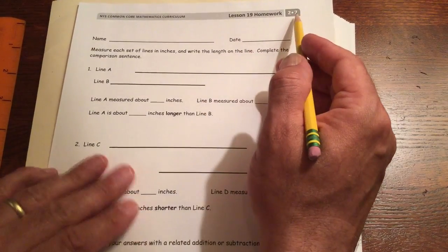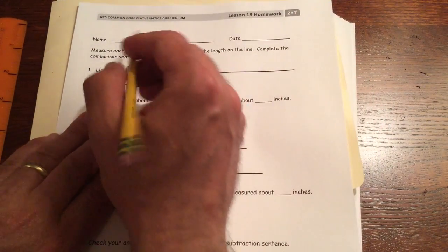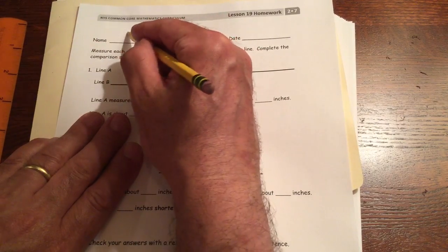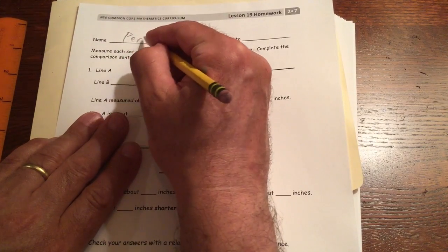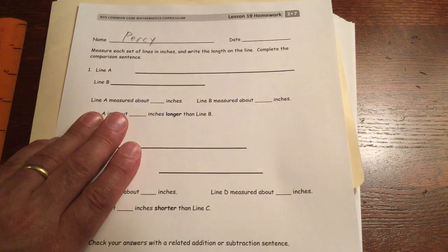This is lesson 19 homework, module 7, grade 2. Write your name. I'm just going to write a name down here. Write your own name.